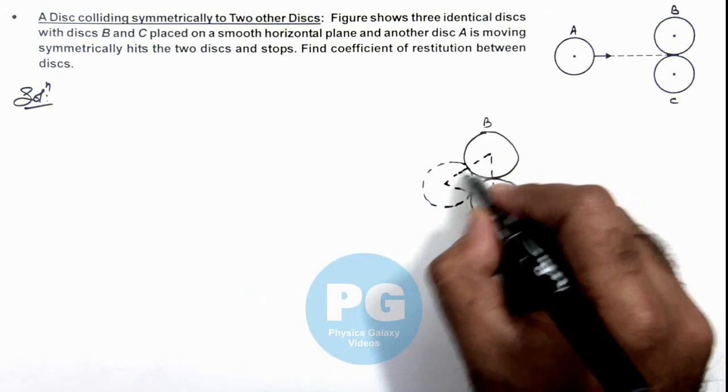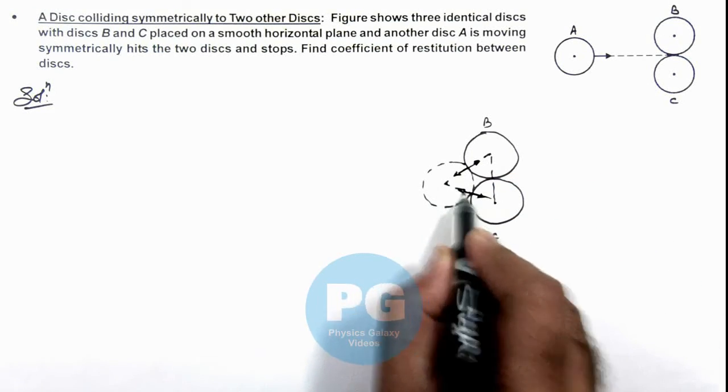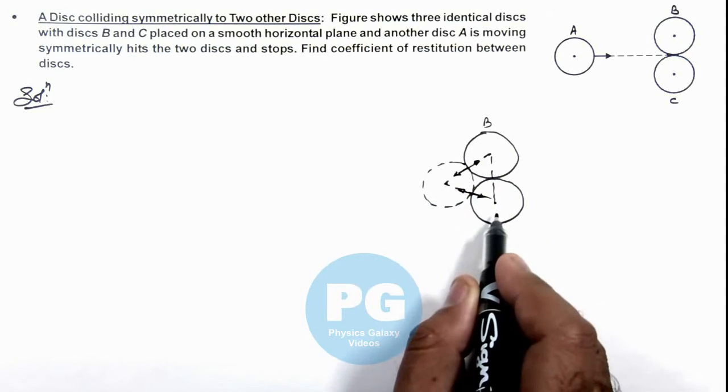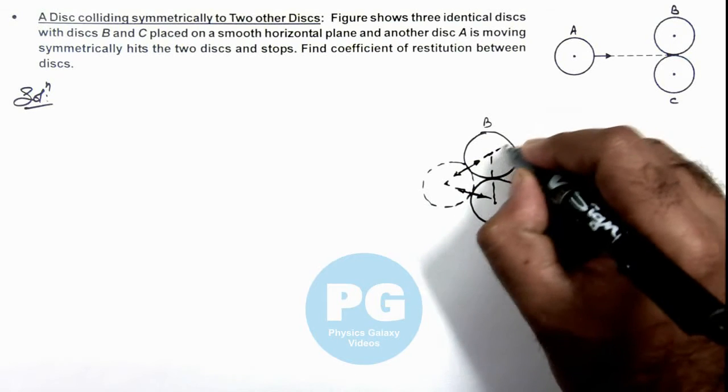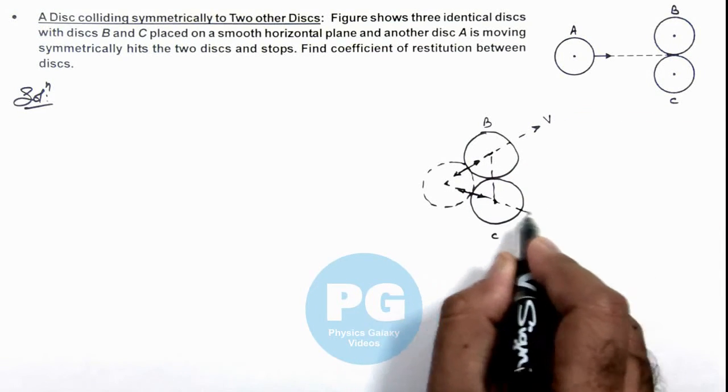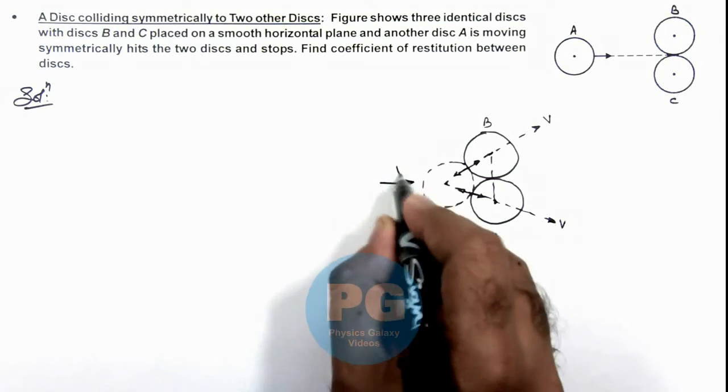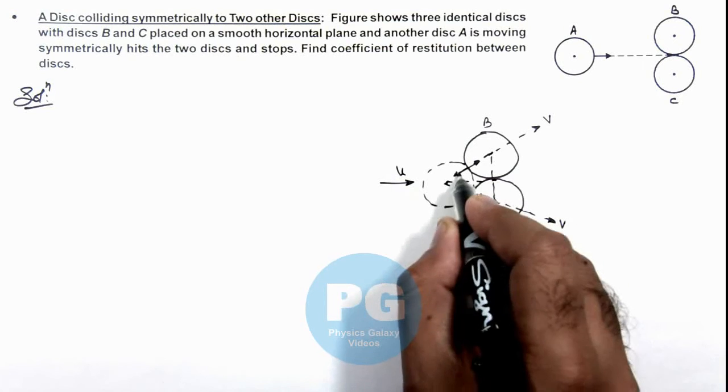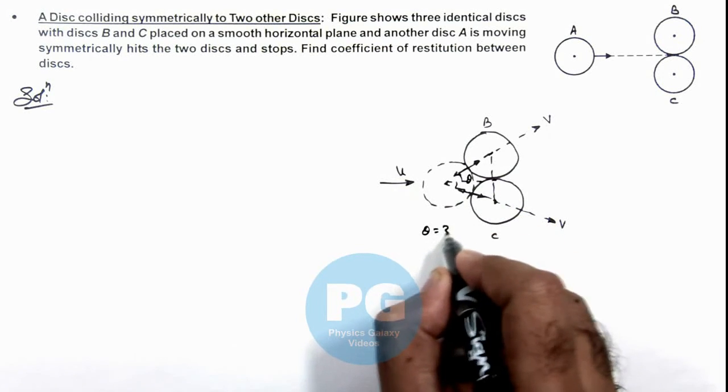At the point of collision, the impulses will be acting between ball A and B, and A and C. After collision, as initially B and C were at rest, these would be moving with velocity v in the direction of impulse. Ball A was coming with speed u, and these angles are all theta, with theta equal to 30 degrees.